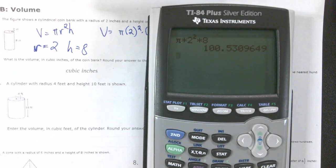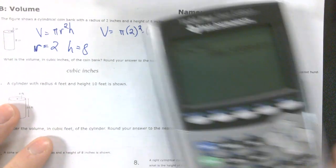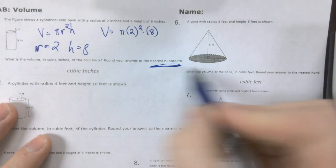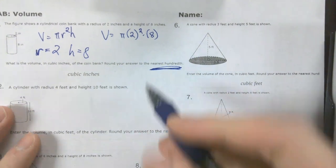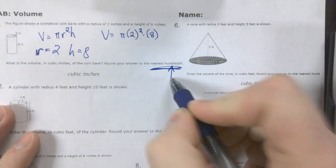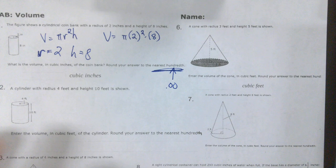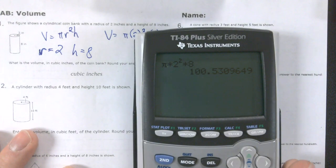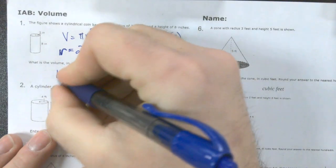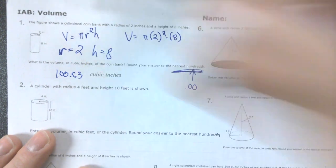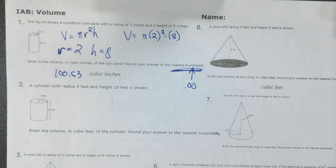That gives us 100.53. How many decimals do we want in our answer in this question, though? Two decimals. Nearest hundredth means we want two decimal places. So we'll cut this off after 5.3. We get 100.53 cubic inches, or inches cubed, right?